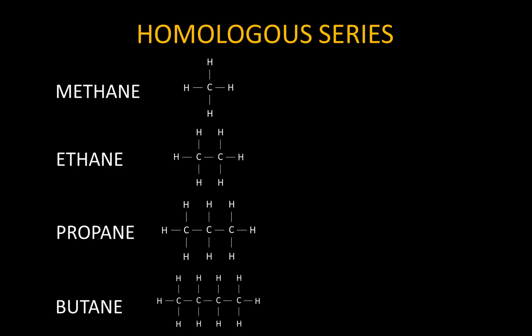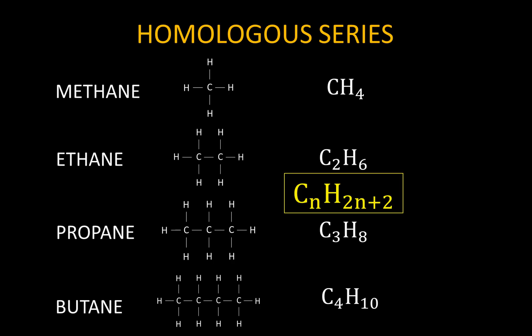I would encourage you to count the number of carbon atoms and hydrogen atoms of each of these compounds. Here are the formulae for these different compounds: first CH4, then C2H6, and so on. Could you invent a formula which would allow you to figure out the number of hydrogen atoms present in any of these compounds, given that you know how many carbon atoms are present? As it turns out, there is a formula for this. All of these compounds follow the same general formula — an important term — CnH2n+2. That is the general formula for this class of organic compounds.